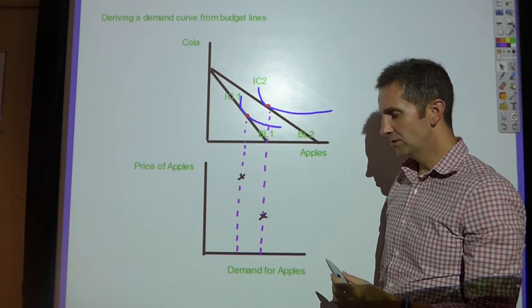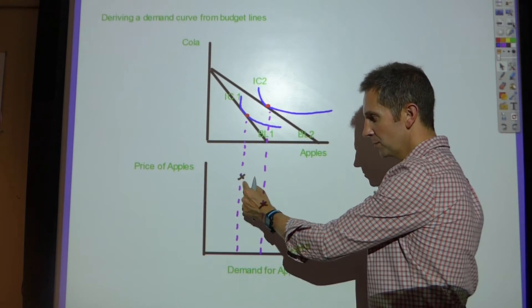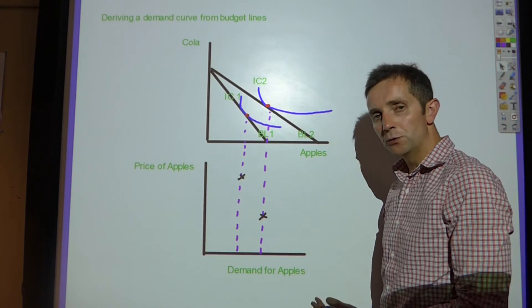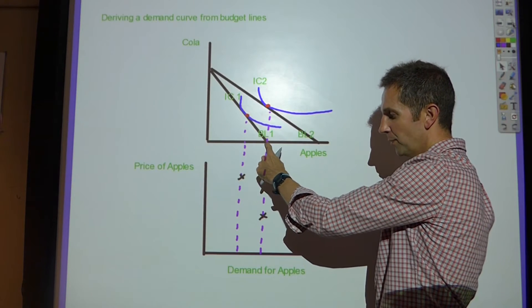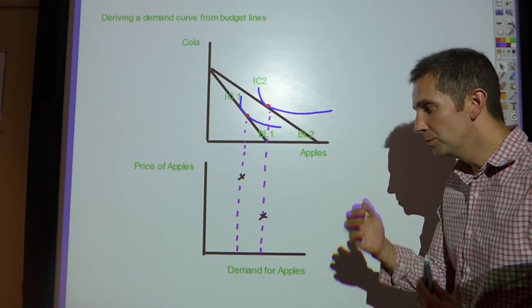So all I need to do is do two things. Number one, show that the price of apples has fallen. So I've shown it by moving the X from here to here. And then show the quantity of apples being consumed. Well I know the quantity being consumed from this diagram is at this point. So I'll just take that dashed line down, and that's the quantity consumed or demanded.